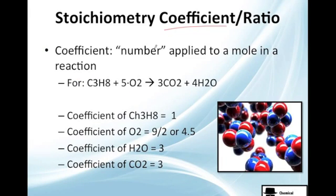Let's continue with coefficient. A stoichiometry coefficient is nothing more than a number which is applied to a mole or molecule in a chemical reaction equation. So we got this equation, which essentially says propane and oxygen will react to carbon dioxide and water. These numbers here, 5, 3, 4, are stoichiometric coefficients.